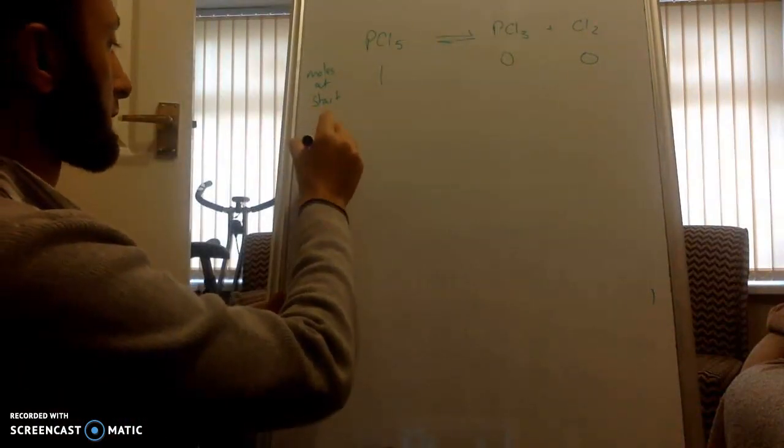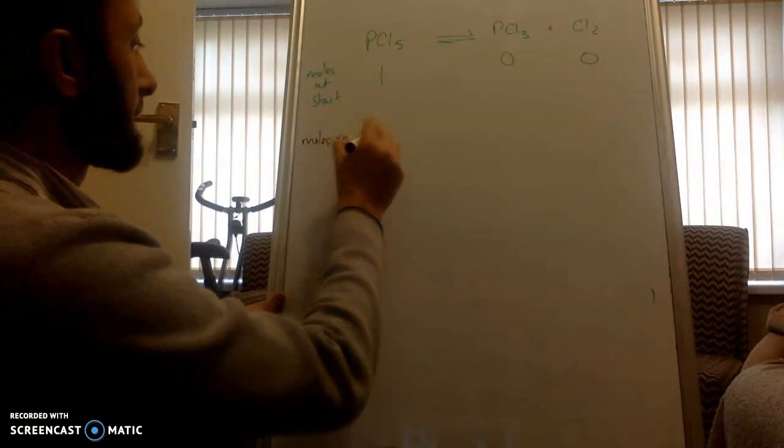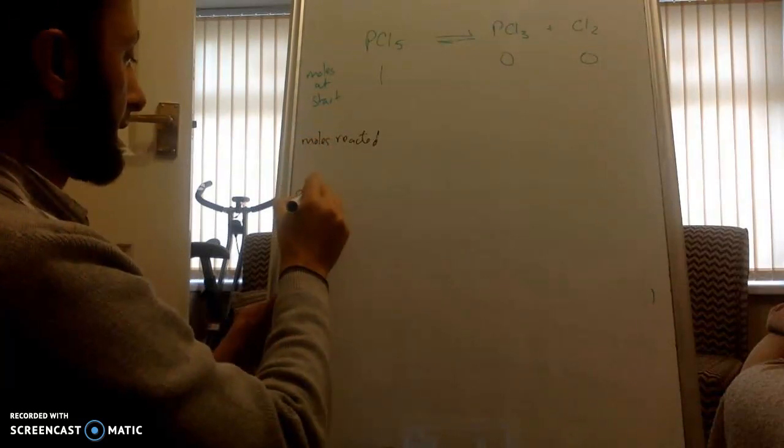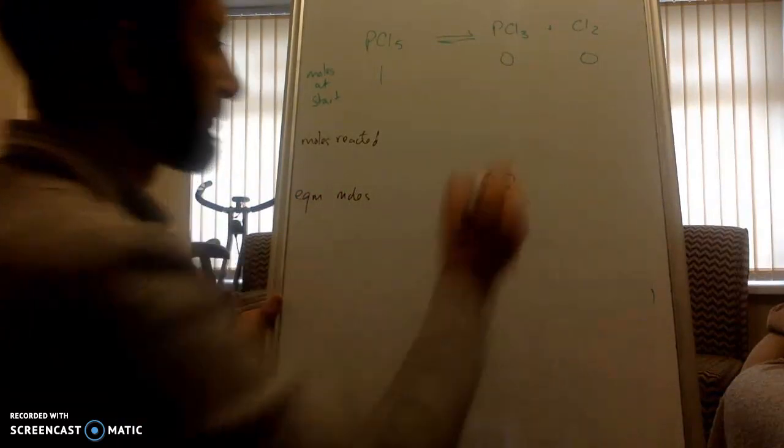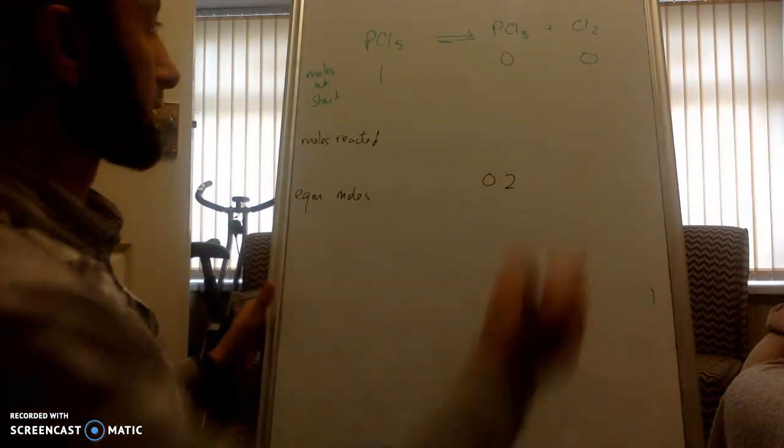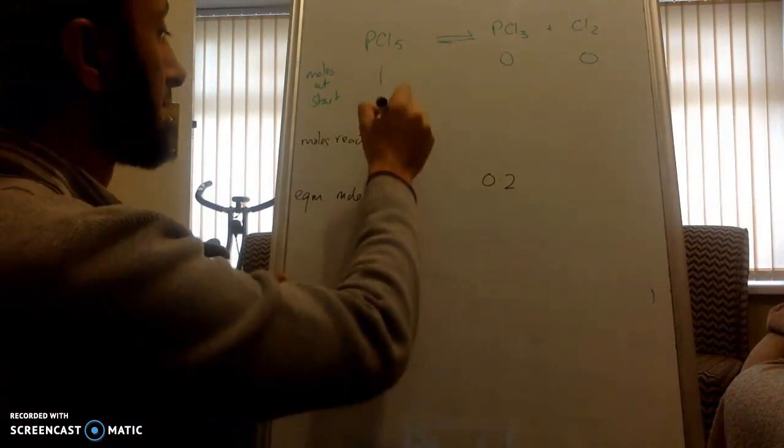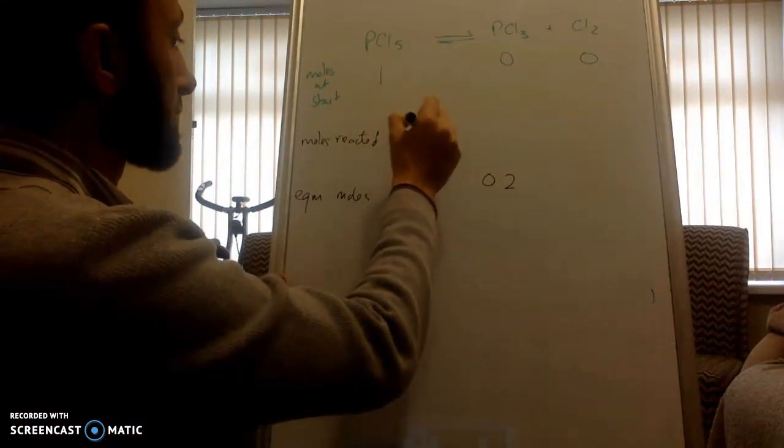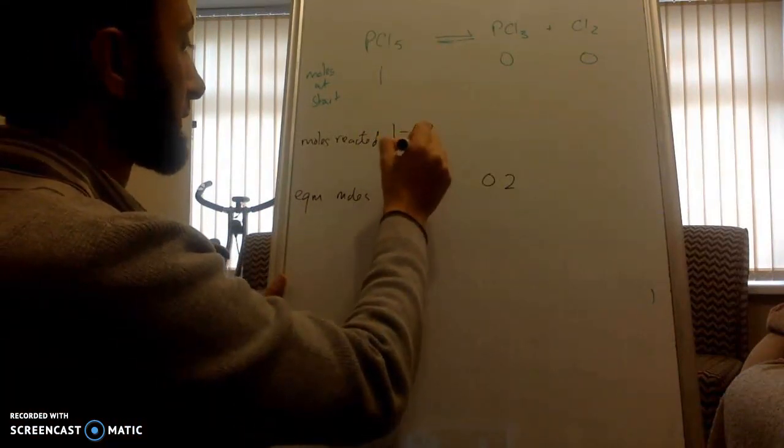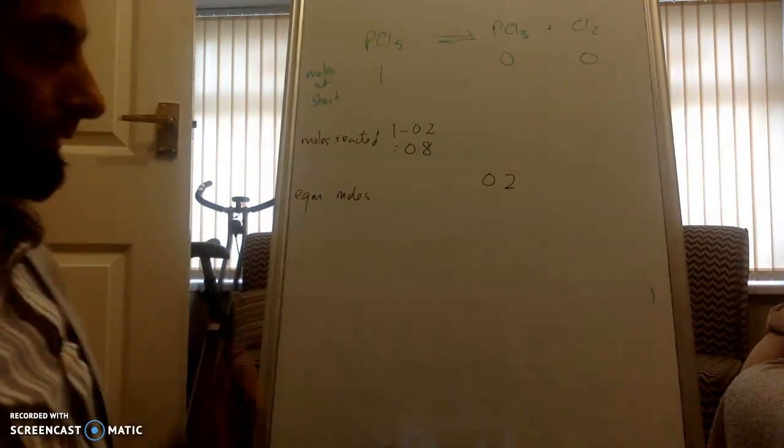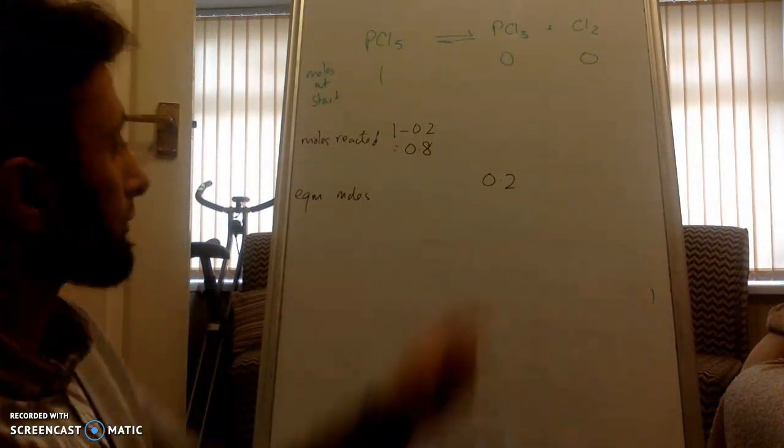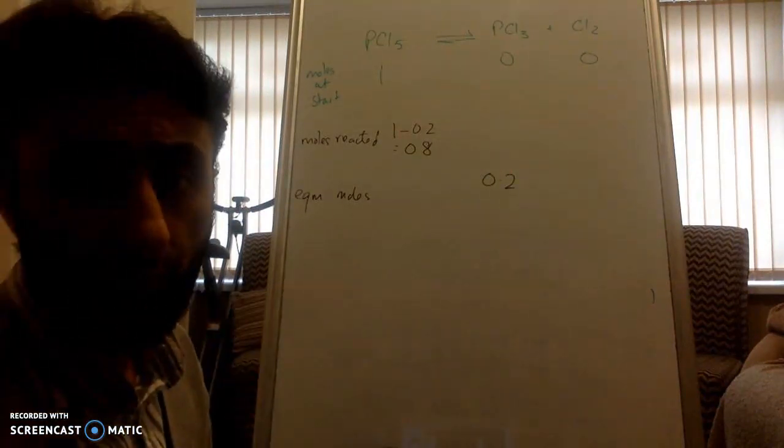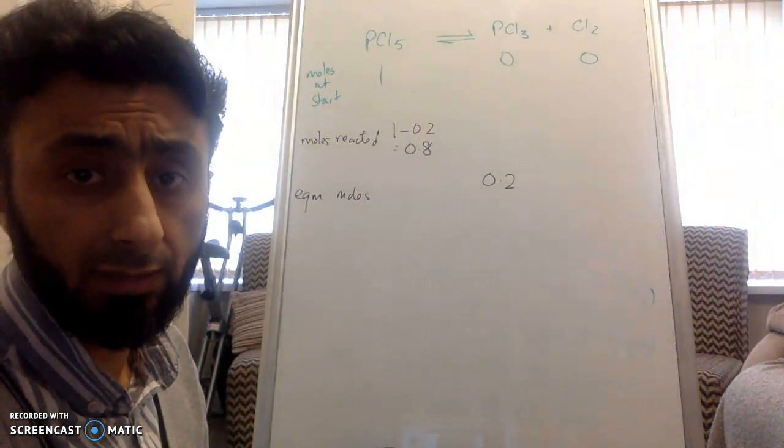Okay, moles reacted and equilibrium moles. 0.2 remains, that means moles reacted will be 1 minus 0.2, which is 0.8. So, 0.2 moles of PCl3 is formed at equilibrium.